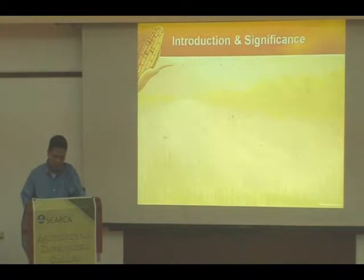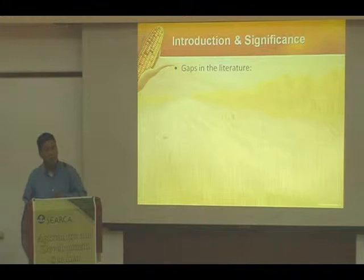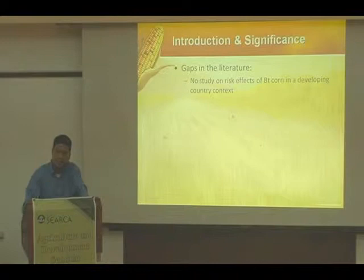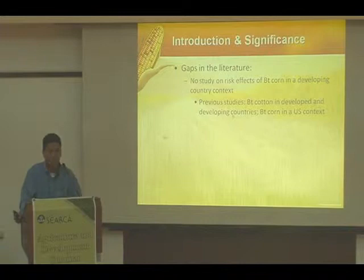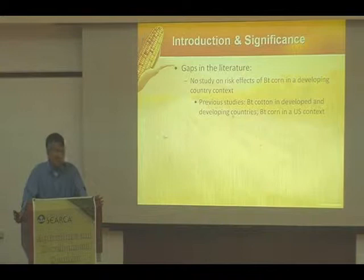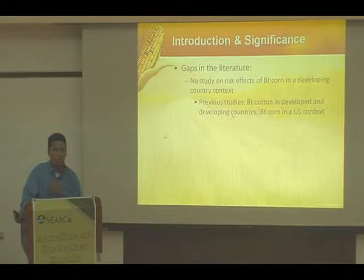There are two main gaps in the literature we want to address. First, no study has looked at the risk effects of Bt corn in a developing country context. Previous studies focused mainly on Bt cotton, which is fundamentally different from Bt corn. There have been studies in both developed and developing country Bt cotton; however, for Bt corn, there's only one study I know of — Hurley and Paul — in the U.S. I haven't found any that looked at production risk effects in a developing country context.